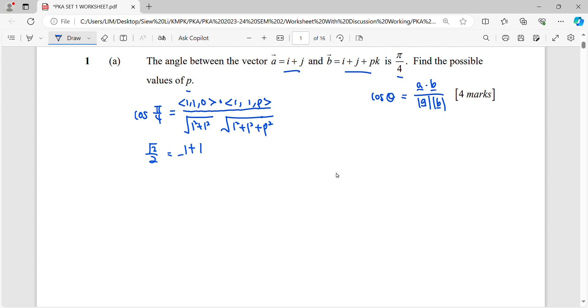Over, this one square root, 1 plus 1, 2, this one, 2 plus p square.